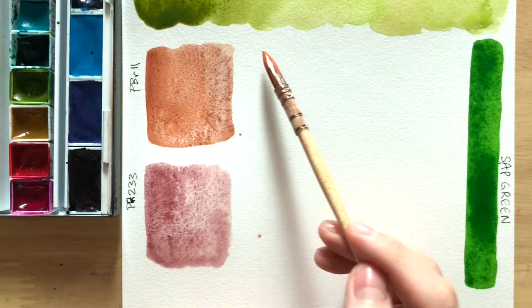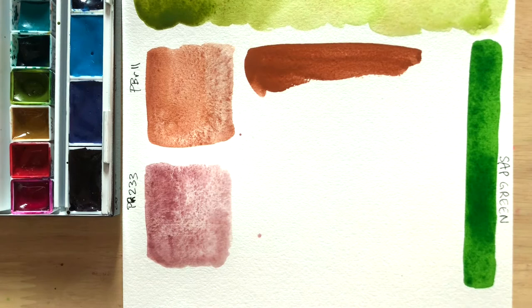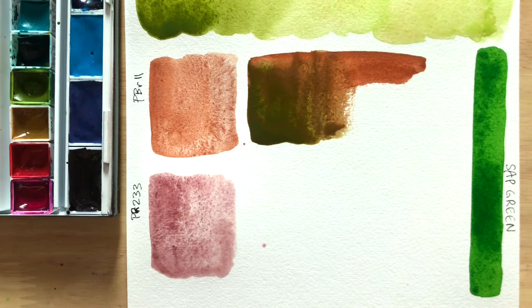As for the green component, today I'll be using Rembrandt's sap green made with PG7 and PY150. Realistically, I'd mix my own batch with more of the PY150, but for today's video, we're just going to use this Rembrandt sap green.